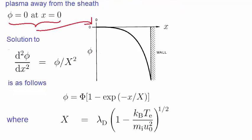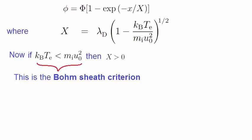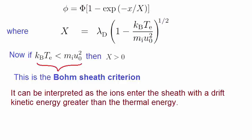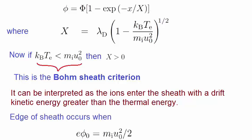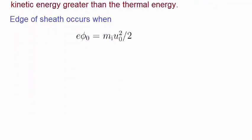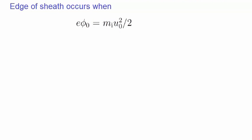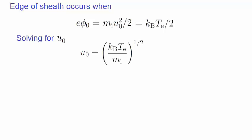Note that if kT is less than mu squared in this expression, then x is greater than 0. This is known as the Bohm sheath criterion. It can be interpreted as the ions that enter the sheath have a drift kinetic energy greater than the thermal energy. So, we can regard the edge of the sheath as occurring at a potential energy that's equal to this kinetic energy. If we replace mu squared with kT, we have the following. Solving for the speed u in this equation, we obtain the following expression. This is known as the Bohm speed.